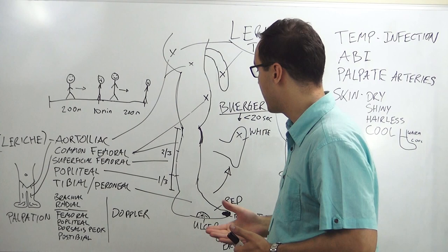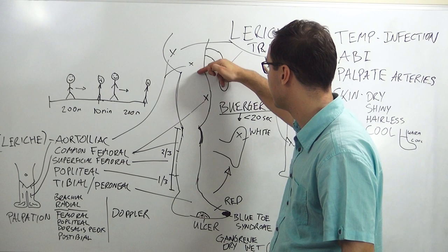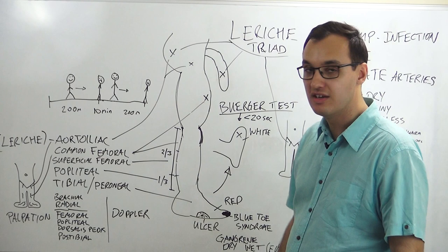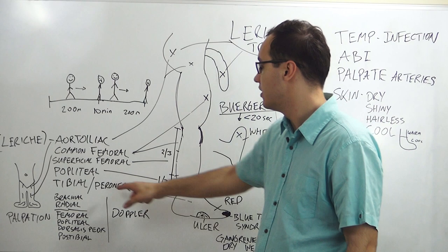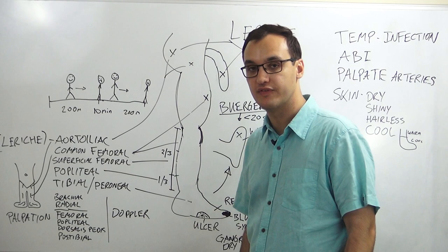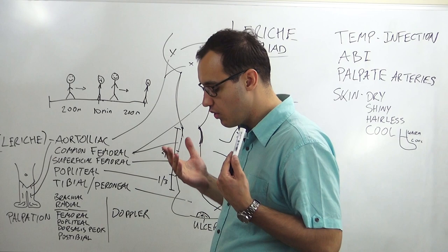When the patient describes pain location, we can estimate which artery is affected. Buttock pain suggests aorta and iliac arteries. Thigh or calf pain suggests the common femoral artery. Upper two-thirds of the calf suggests superficial femoral artery. Lower one-third of the calf suggests the popliteal artery. Foot pain suggests tibial or peroneal arteries.